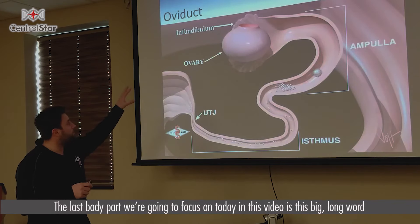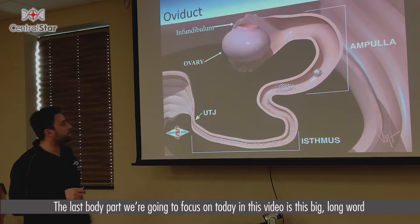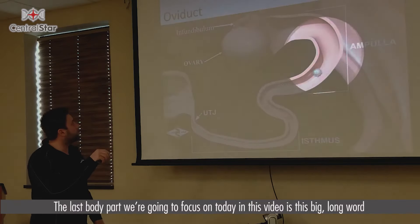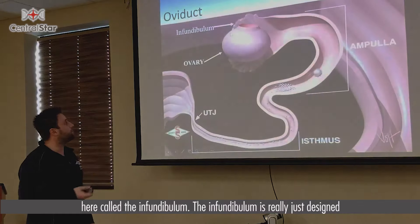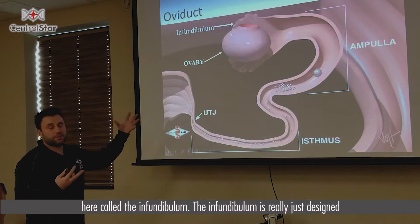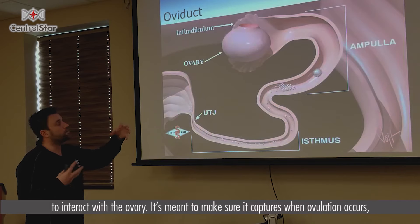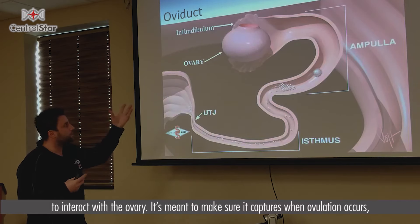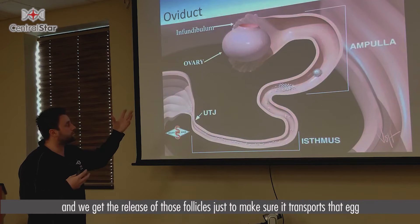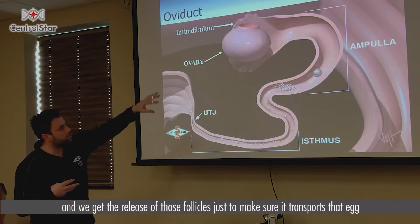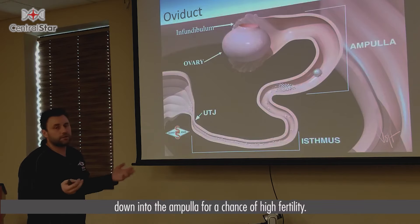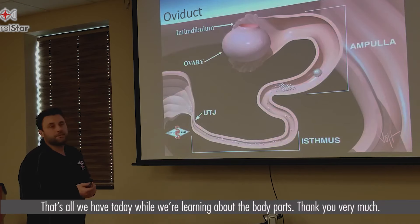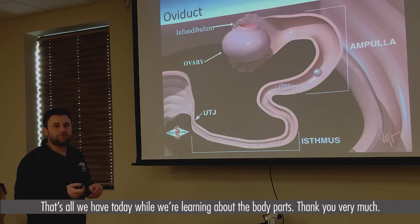The last body part we're going to focus on today is the infundibulum. The infundibulum is really just designed to interact with the ovary — it's meant to capture when ovulation occurs and we get the release of those follicles, and to transport that egg down into the ampulla for a chance at high fertility. That's all we have today while learning about the body parts. Thank you very much.